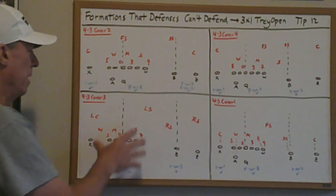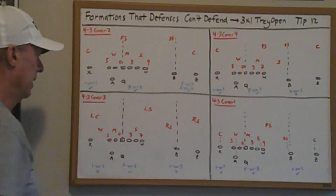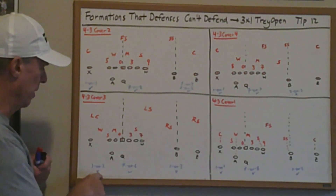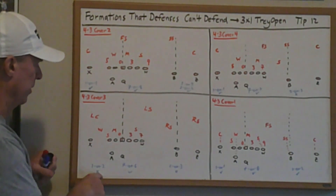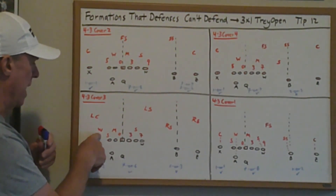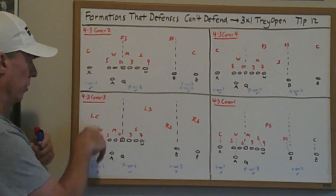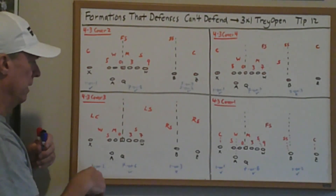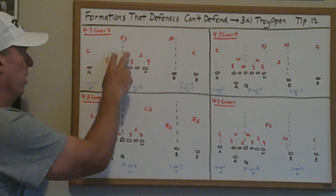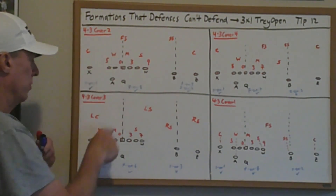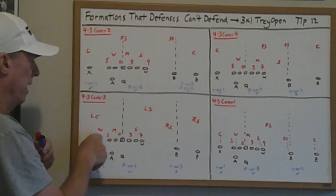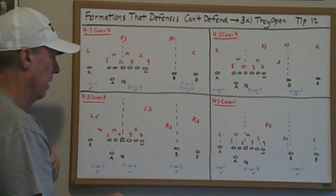Against Cover 3, the pass side to the boundary is lost because the Will linebacker walks out, making it 1-on-2. Essentially the Mike and Will have moved out so there's somebody covering the short zone area into the boundary.